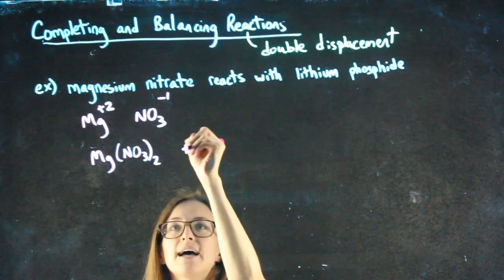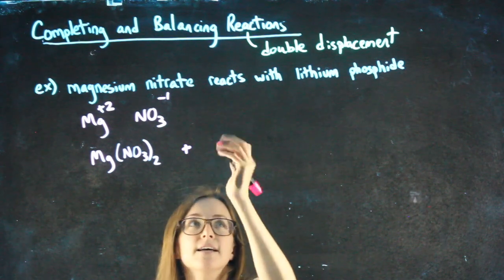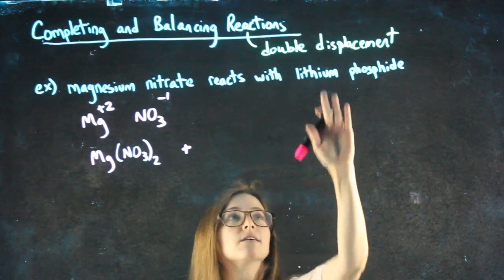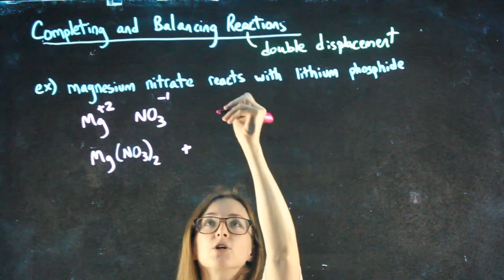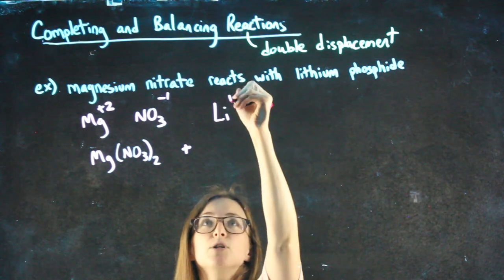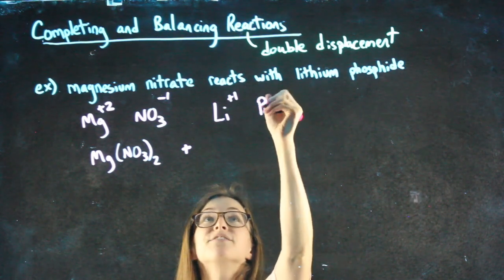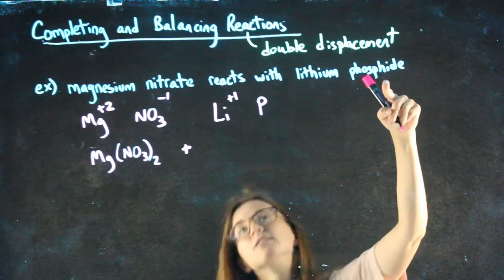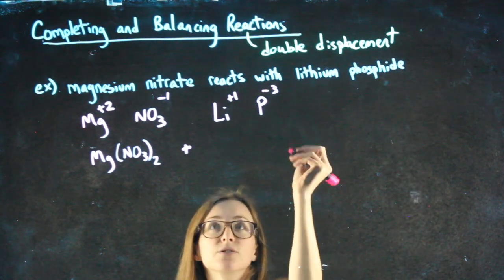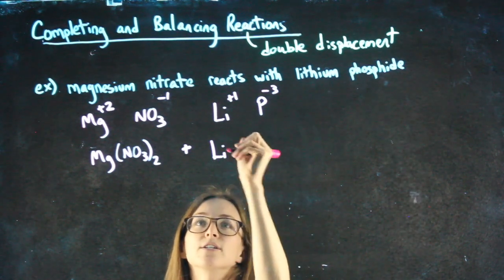So I'm going to add to this whatever lithium phosphate is. But again, starting on the first line, writing out lithium, which is a plus one. Phosphate - not phosphide - phosphate is a minus three. And then I can crisscross.